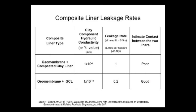Lining system selection is governed by this performance standard. The measure for a lining's impermeability is the K value, or hydraulic conductivity. A GCL and a geomembrane combination is two orders of magnitude more impermeable than a compacted clay layer with a geomembrane.